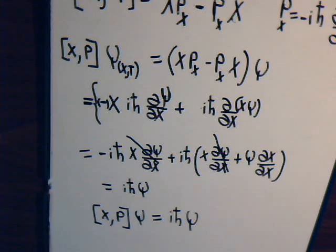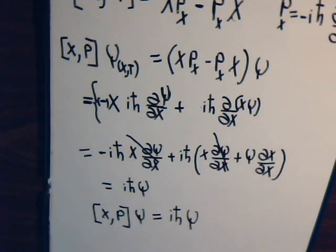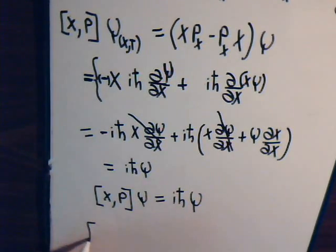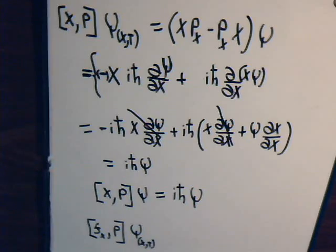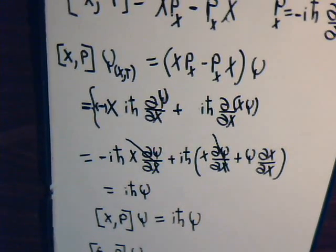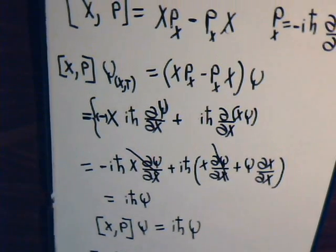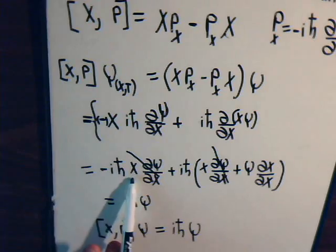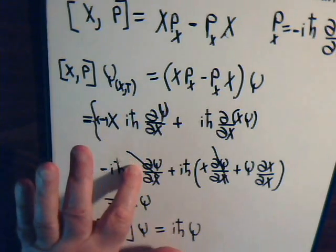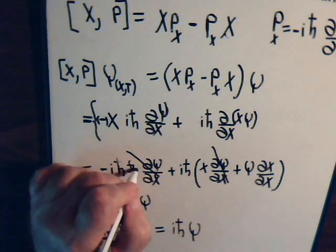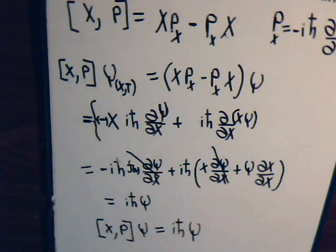One other thing that we can say, suppose that we had a commutator similar to this, but instead of having just a coordinate x and a momentum, suppose that we had some function of x, again operating on psi, what kind of result would this give us? Well, if we went through the whole process, like we did up here with [x, p], what will happen is, here instead of having x, we would have f of x, and instead of that being x, that would be f of x.